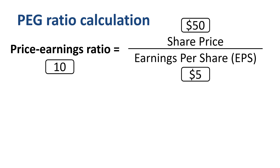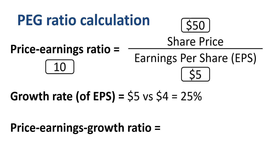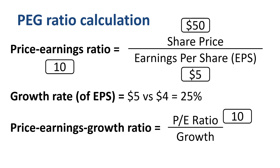If the company's current EPS is $5 while it was $4 in the prior year, then they realized an EPS growth rate of 25% over the past year. This is what you need to calculate the price-earnings growth ratio. Take the P/E ratio that we calculated and divide it by the growth rate. P/E divided by a growth rate of 25 gives you a PEG ratio of 0.4. In the PEG ratio calculation, the growth rate is adjusted from a percentage basis to a whole number basis.